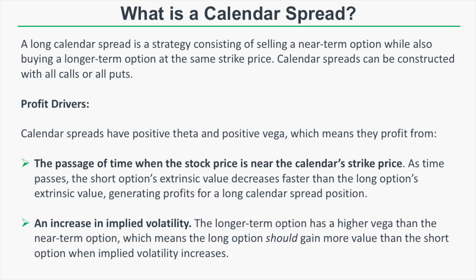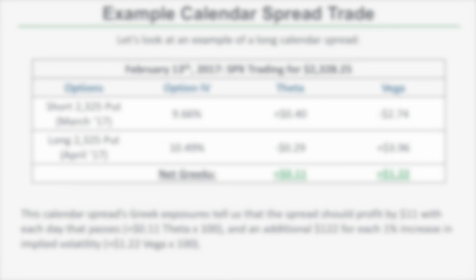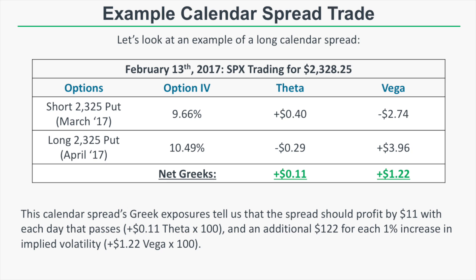Let's look at a hypothetical long calendar spread on SPX, the S&P 500 index. These option prices are from February 13th, 2017, when SPX was trading at 2328.25. The position we're looking at is the long 2325 put calendar spread using March and April options — short the 2325 put in March and long the 2325 put in April. The short put has an IV of 9.66% while the long put has an implied volatility of 10.49%.